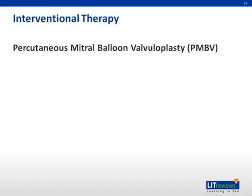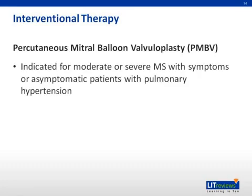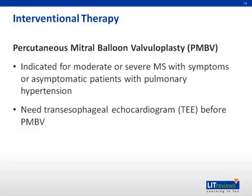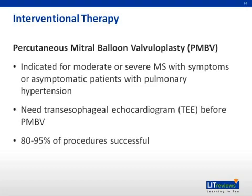Interventional therapy with percutaneous mitral balloon valvuloplasty (PMBV) is indicated for patients with moderate or severe MS with symptoms, or for asymptomatic patients with pulmonary hypertension. In order to proceed with PMBV, the patient should have favorable valve morphology as evidenced by valve mobility, subvalvular thickening, valvular thickening, and calcification. Scoring systems exist to formally quantify valve morphology, with less of all the named factors being more favorable. Additionally, PMBV should not be attempted if there is LA thrombus or moderate to severe mitral regurgitation, as documented by transesophageal echocardiogram. 80 to 95% of PMBV procedures are successful, and the procedure typically doubles valve area. Possible complications include development of severe MR in up to 10% of patients, creation of an ASD, and LV perforation.